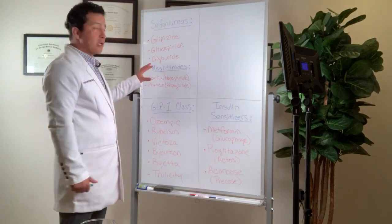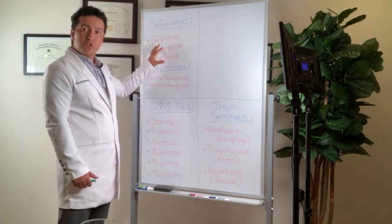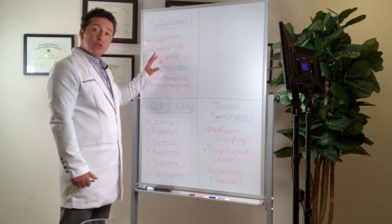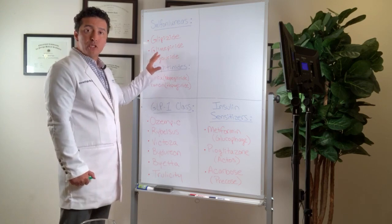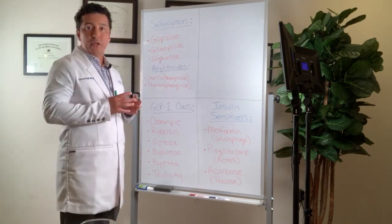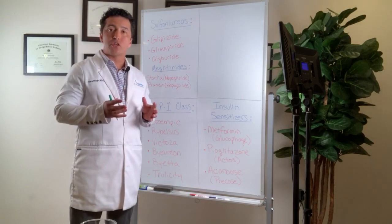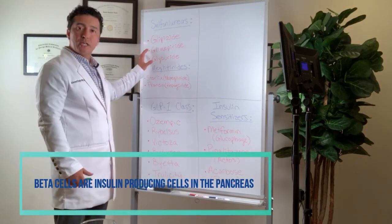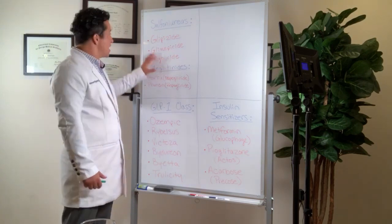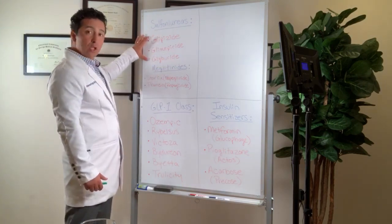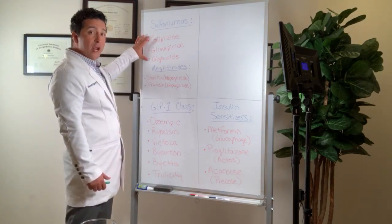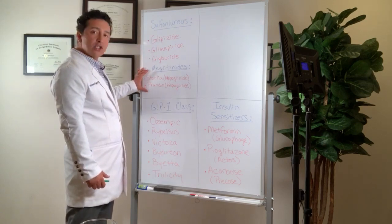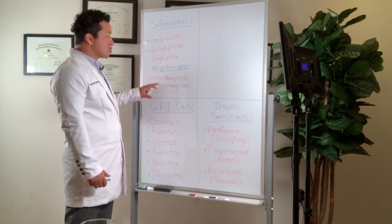Now the theory behind the sulfonylureas, the way they work, is that they actually make your body produce insulin. So they basically go to your pancreas, and in pancreas there are cells called beta cells. The beta cells are stimulated by sulfonylureas. Now this first group, we call them sulfonylureas, are longer acting, and meglitinides are shorter acting, which are Starlix and Prandin.